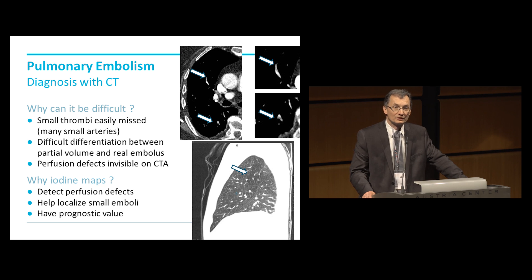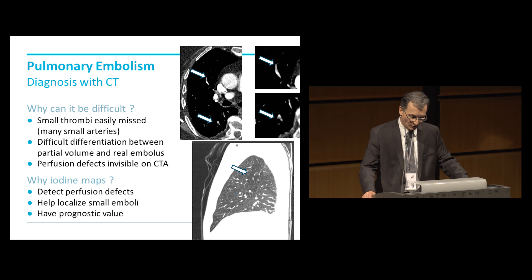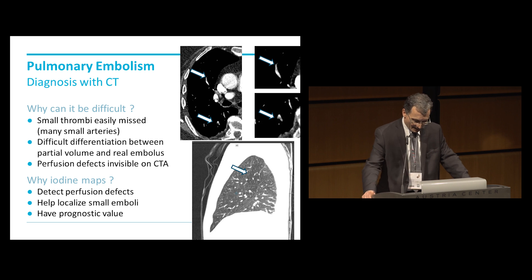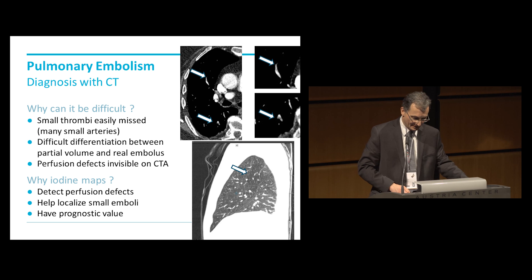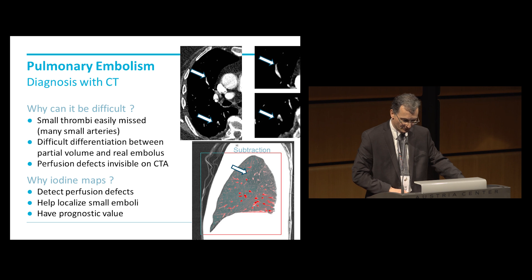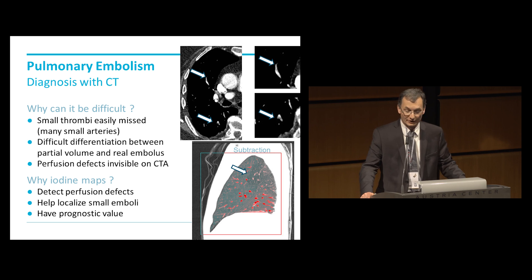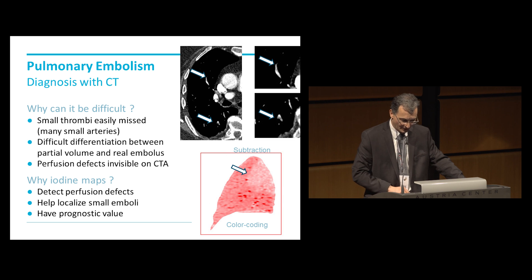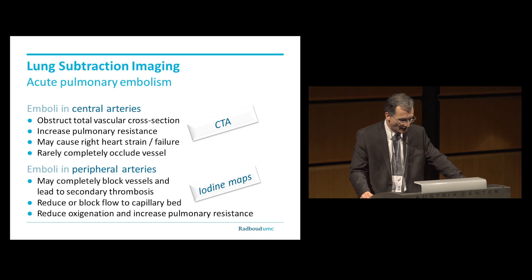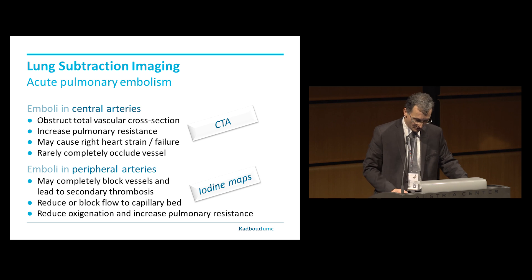We all know that it sometimes can be difficult to detect small emboli. Thanks to partial volume effects, you're not really sure if this is really an embolus or just a partial volume effect — sometimes you just easily miss those. For example, this was an embolus which was not described. Now if you look at perfusion maps, you see differences in enhancement, and it can help you localize small emboli. We also know that they have a certain prognostic value — the more areas are affected, the worse the outcome for the patient, or the bigger the risk for right heart failure. Emboli in central arteries are easily detected by CTA, while emboli in peripheral arteries are probably more easily detected using iodine maps.